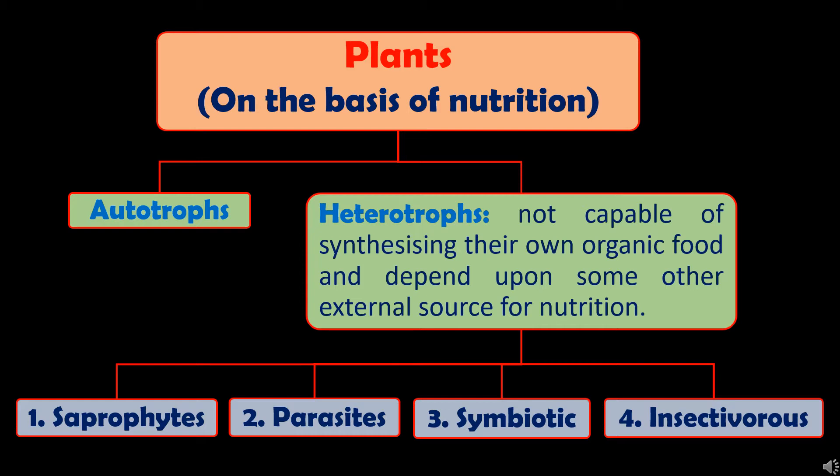Heterotrophs are further categorized into four groups on the basis of sources from which they get their nutrition, and the groups are saprophytes, parasites, symbiotic and insectivores.